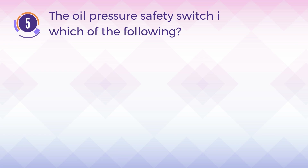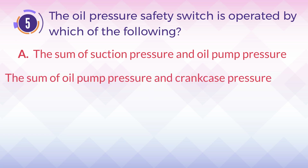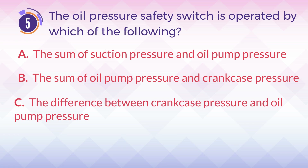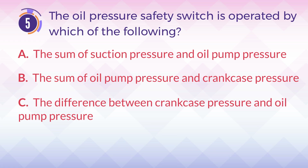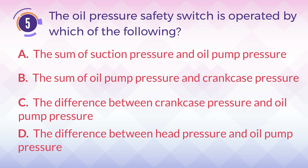Number 5. The oil pressure safety switch is operated by which of the following? A. The sum of suction pressure and oil pump pressure. B. The sum of oil pump pressure and crankcase pressure. C. The difference between crankcase pressure and oil pump pressure. D. The difference between head pressure and oil pump pressure.